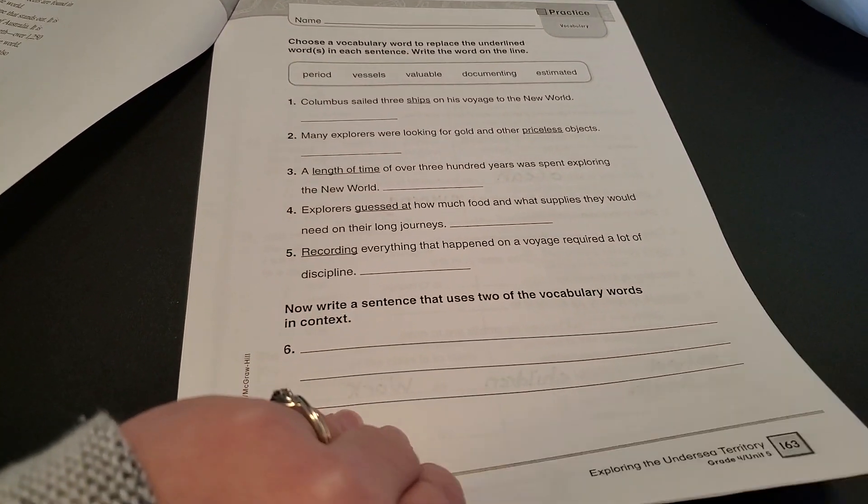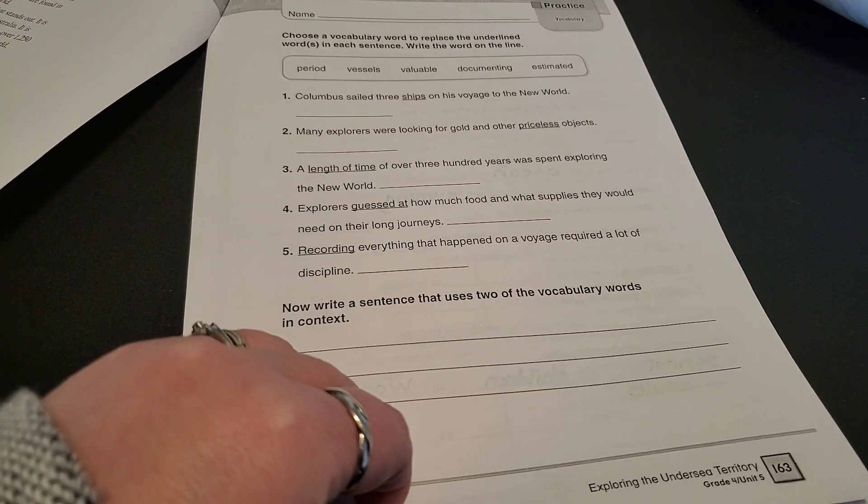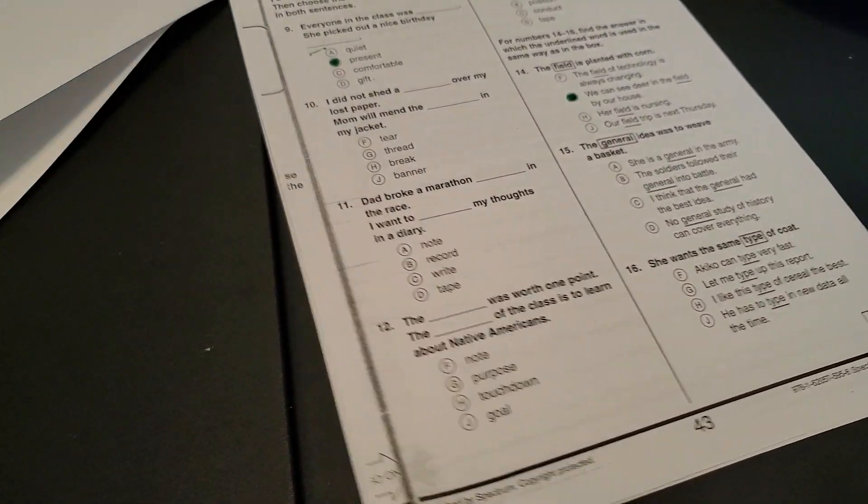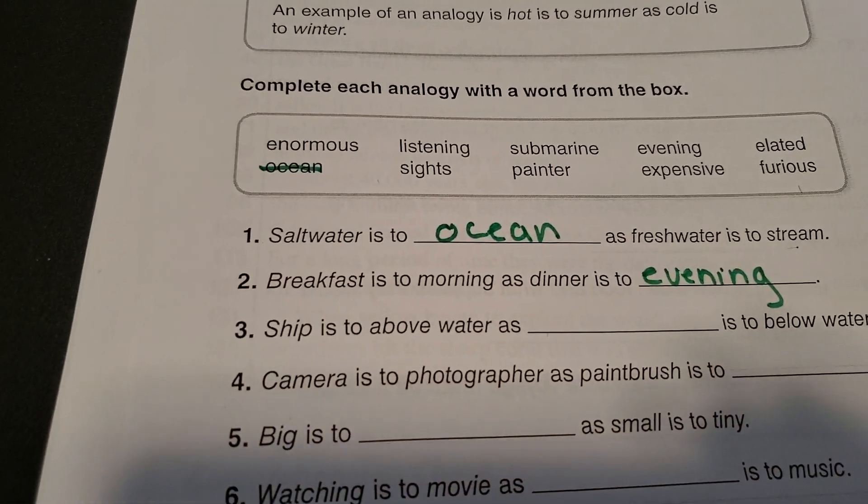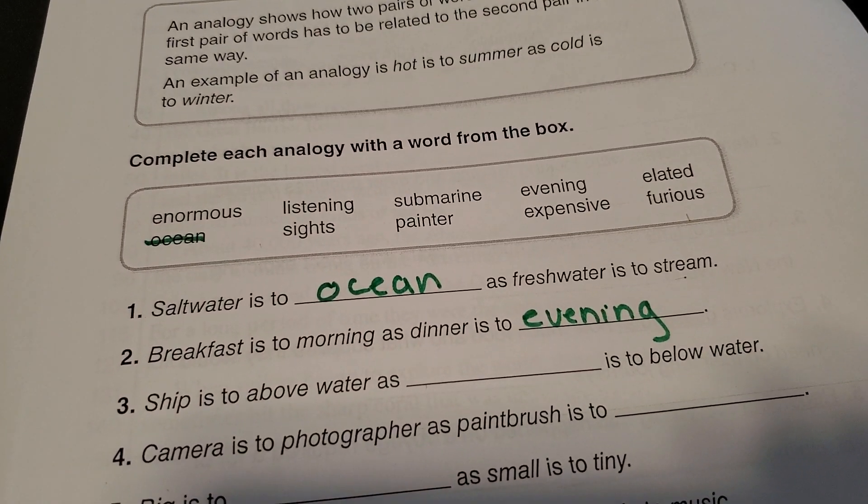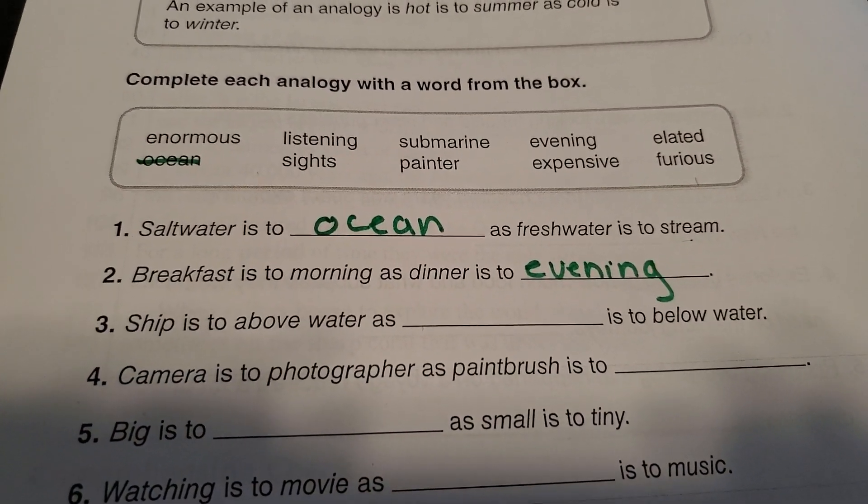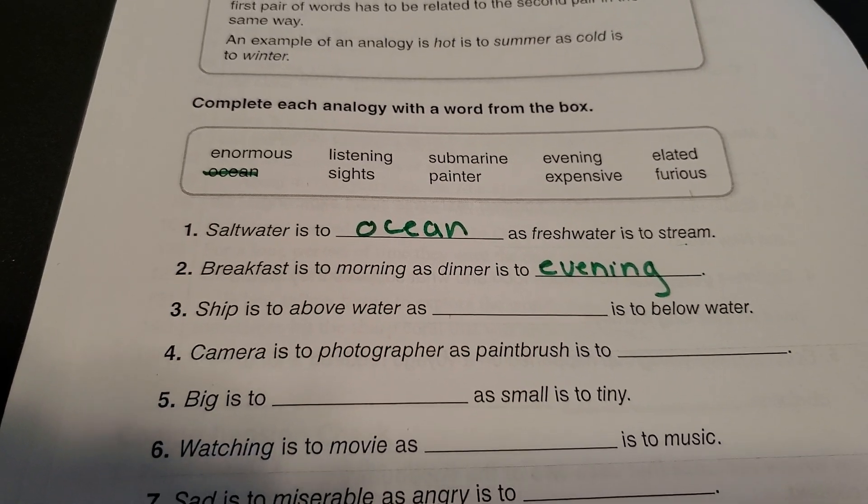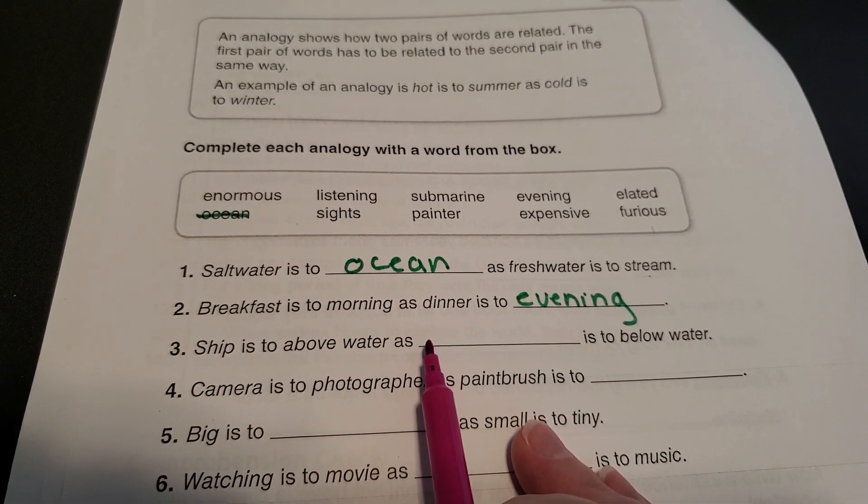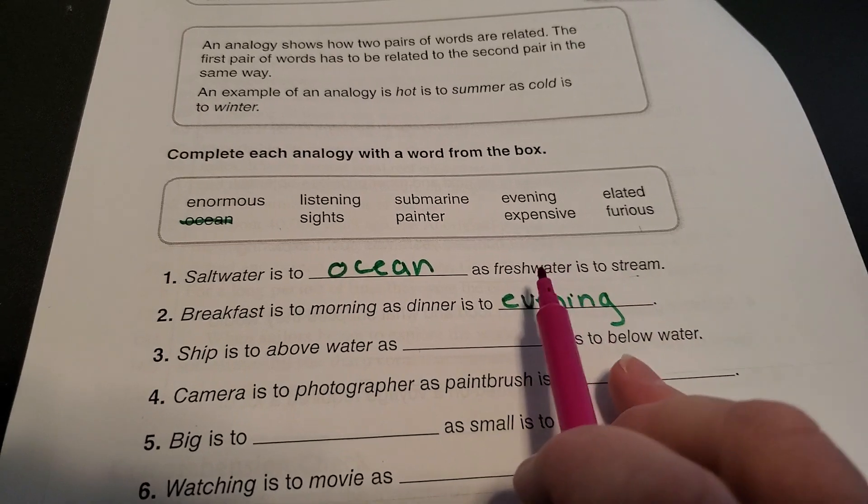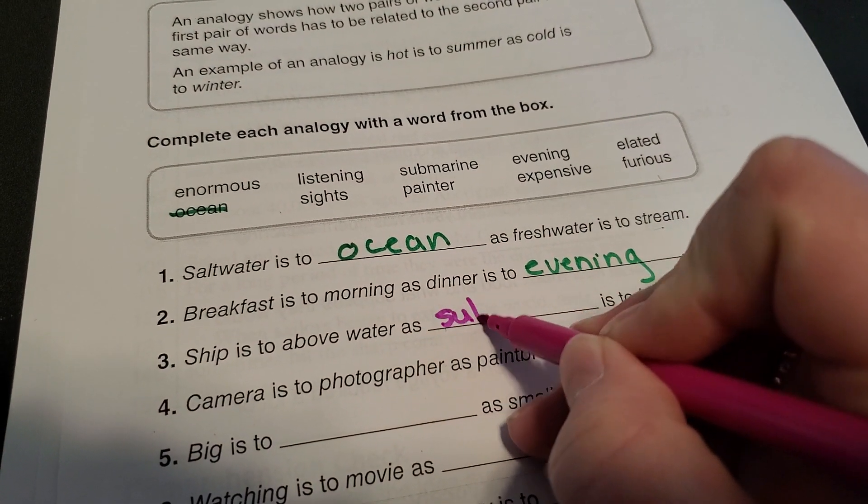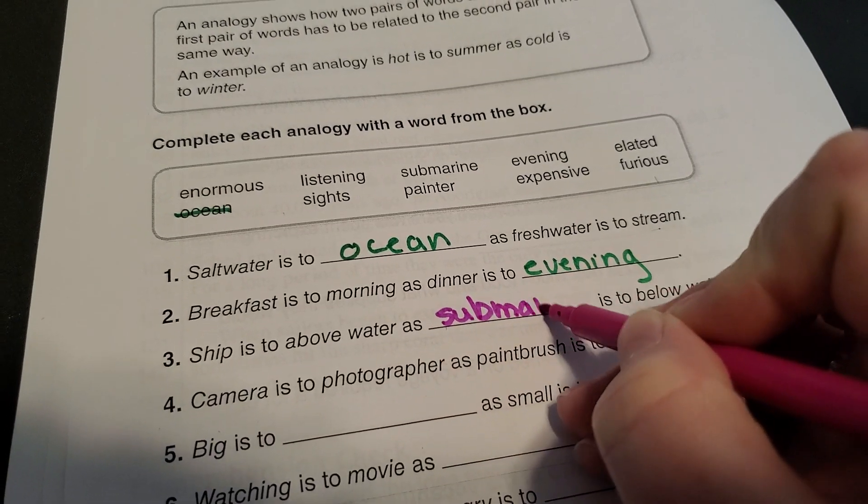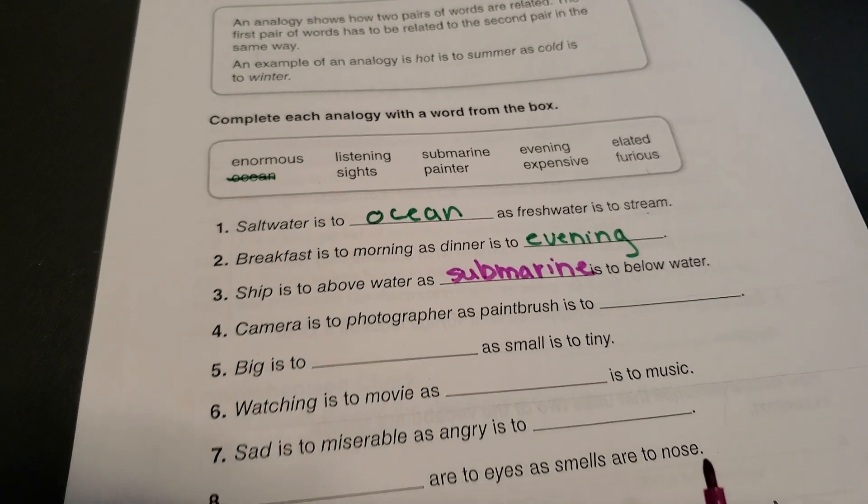Okay, so yesterday, I'm just going to kind of flip through my packet here, and you guys can flip through yours. We did our analogies, right? We had salt water is to ocean as fresh water is to stream. Breakfast is to morning as dinner is to evening. Let's see if you guys got some of these other ones right. Ship is to above water as blank is to below water. What goes below water? Hopefully everybody put submarine. Give yourself a big high five if you got that one right.